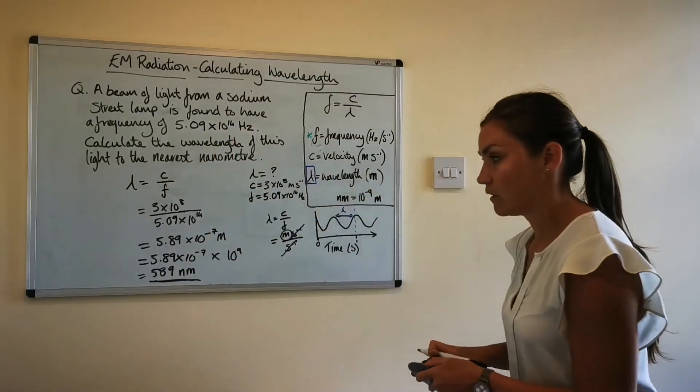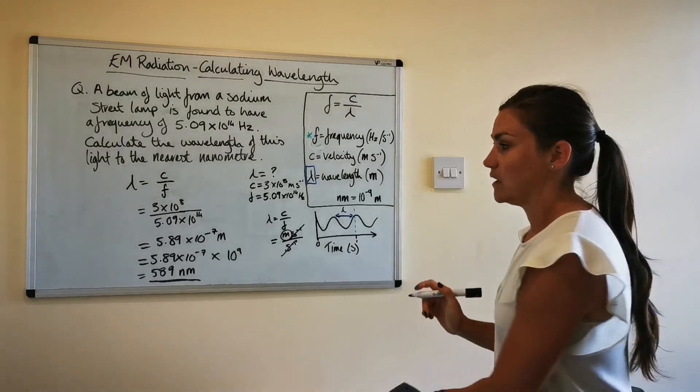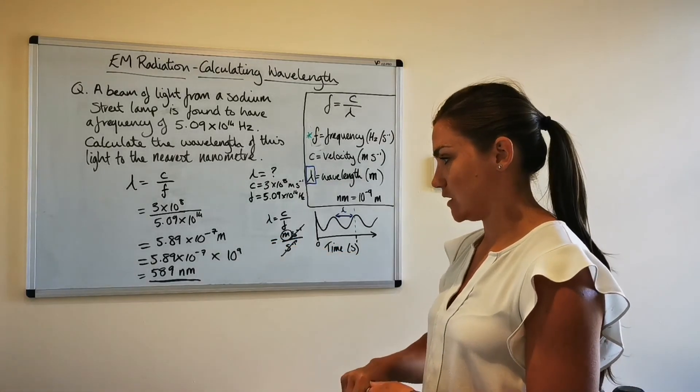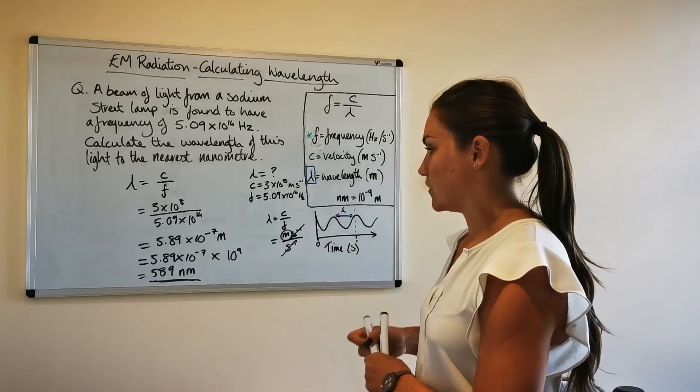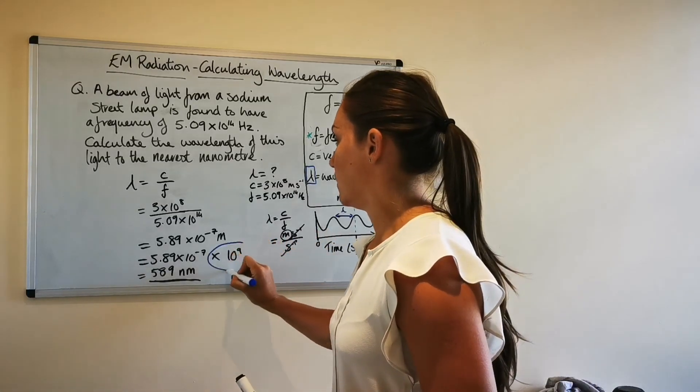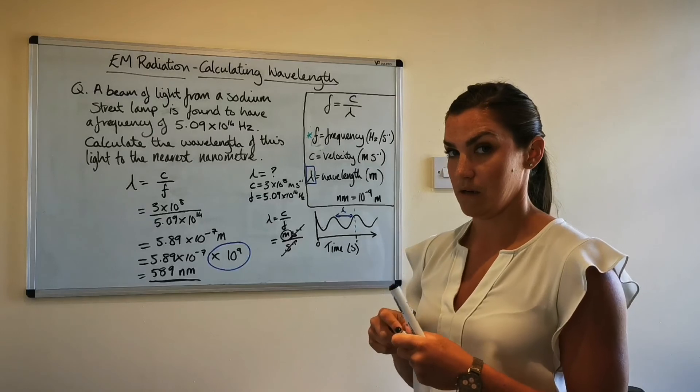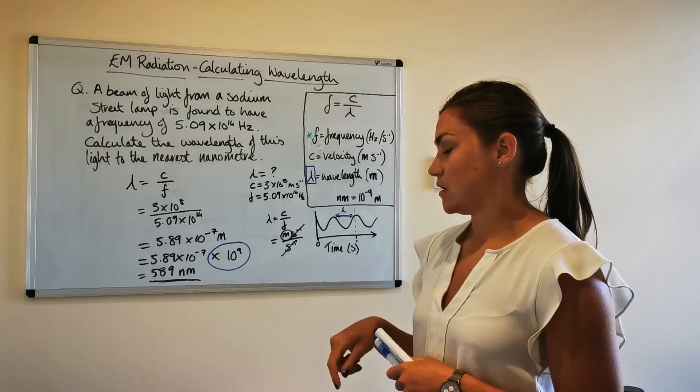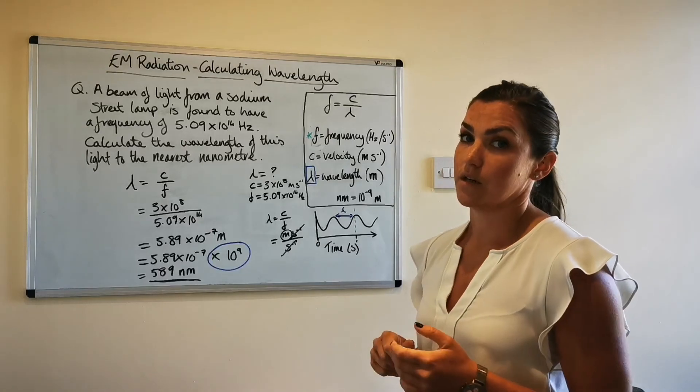So that's what you have to remember at the end is that your wavelength is going to come out in meters so you'll need to convert it into nanometers and to do that all you have to do is multiply it by 10 to the power of 9 because there are 10 to the power of 9 nanometers in 1 meter.